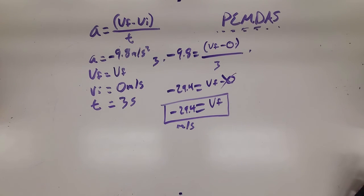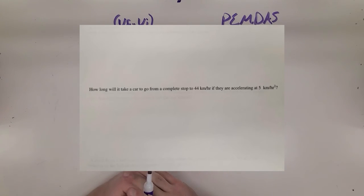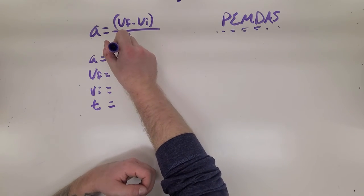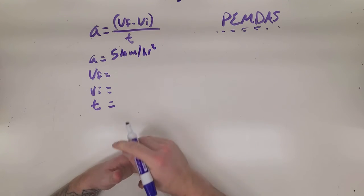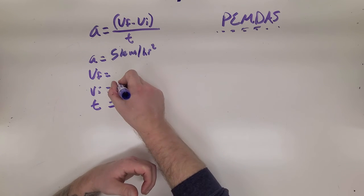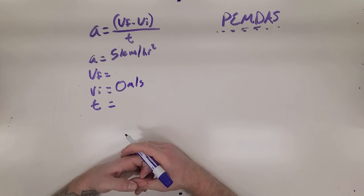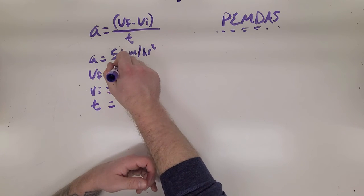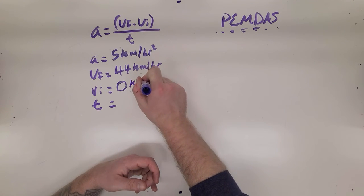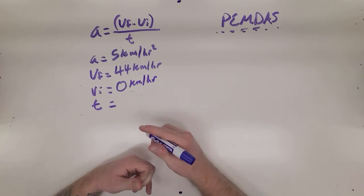Let's take a look at just one more problem. For this one, how long will it take a car to go from a complete stop to 44 kilometers per hour if they are accelerating at 5 kilometers per hour squared? That is an odd use of units for acceleration. So let's put in the acceleration here. We know that, 5 kilometers per hour squared. How long will it take a car to go from a complete stop? So that's an initial velocity of 0 kilometers per hour to 44 kilometers per hour. That would be the final velocity. Time, that's what we want to know. So we're trying to find T.